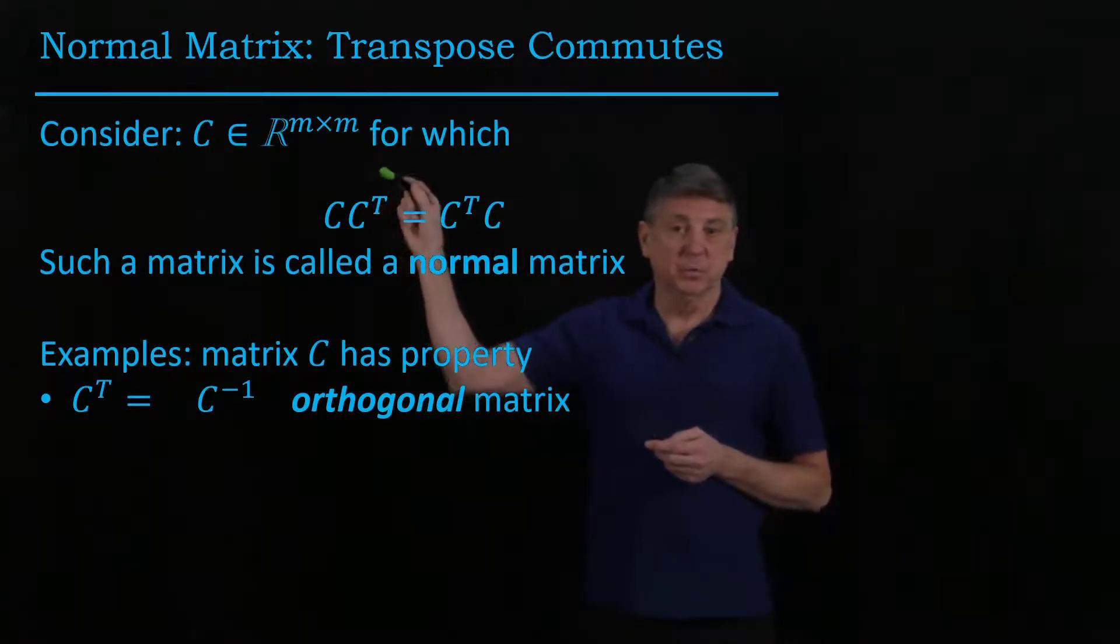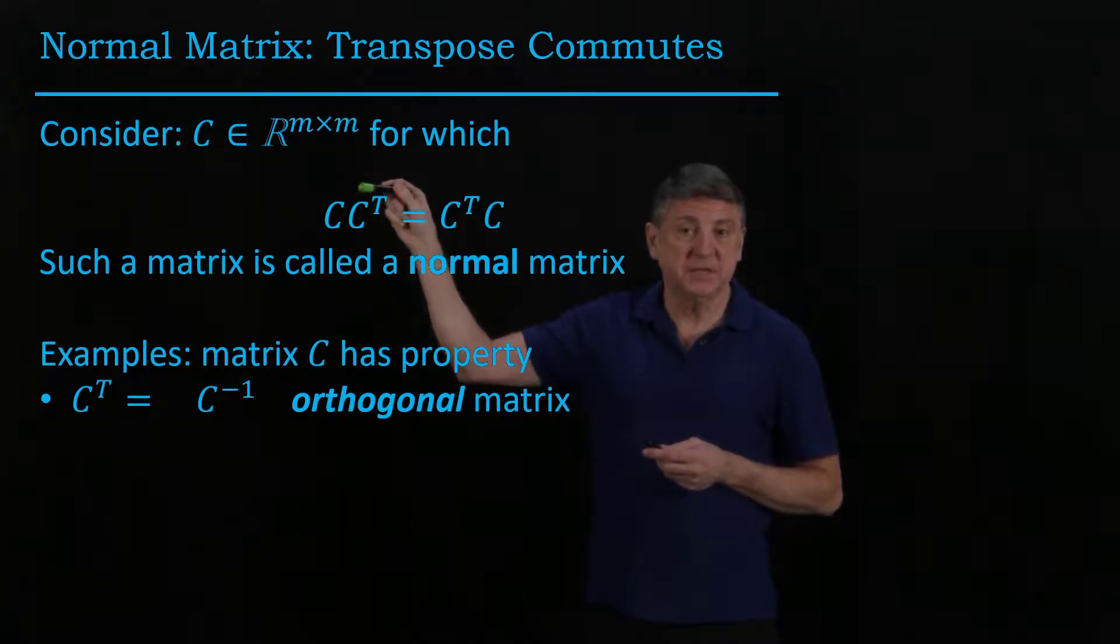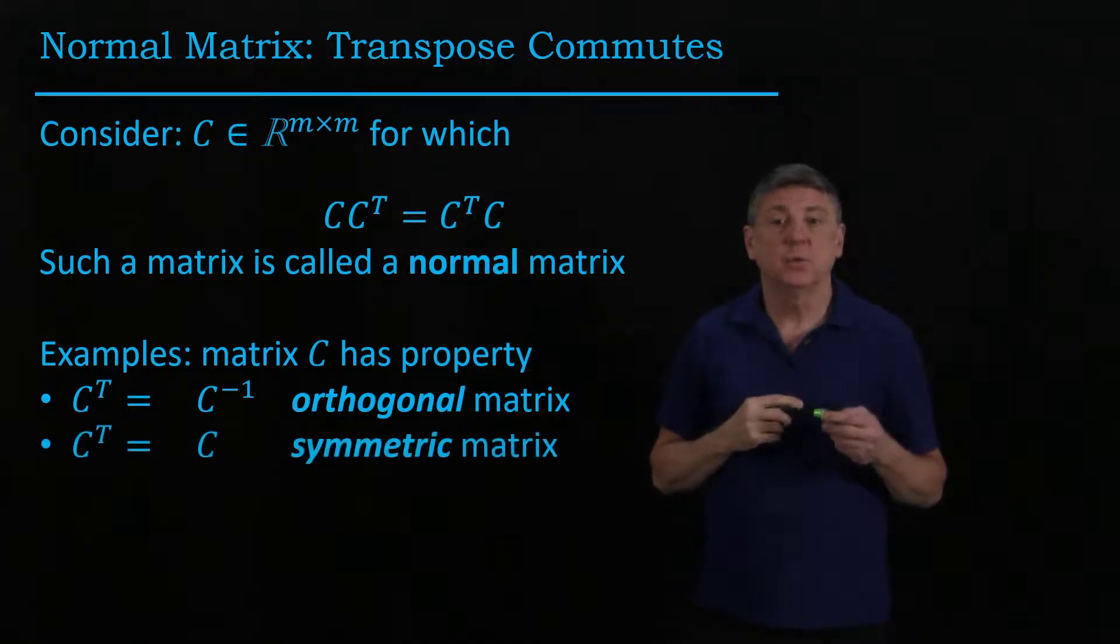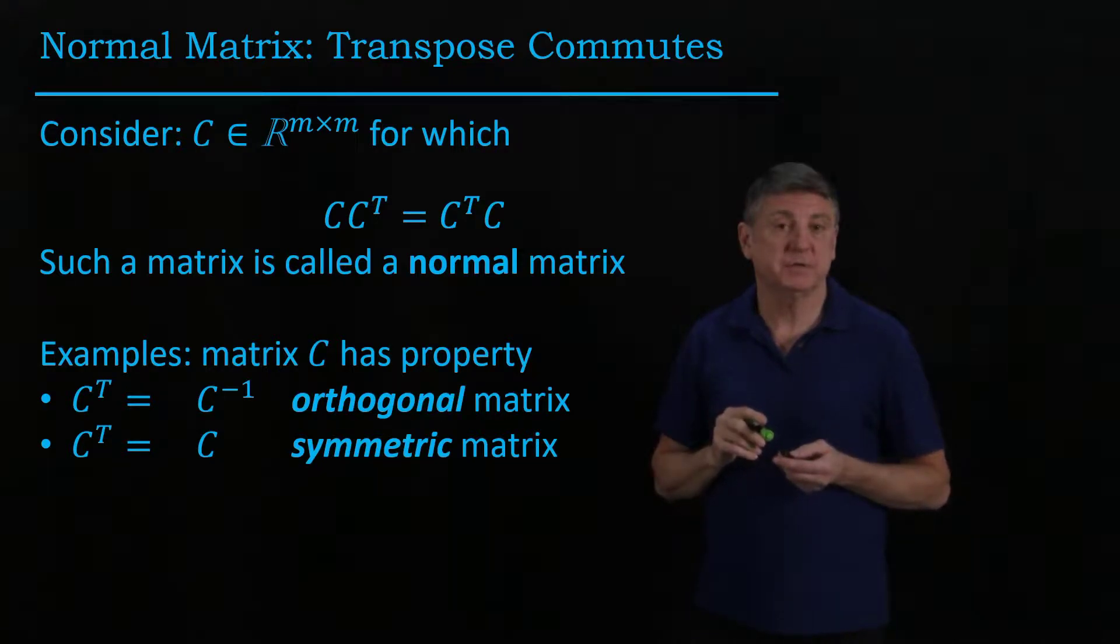Another example would be when C transpose is the same as C, so in this case it would be C times C equals C times C. When a matrix is equal to its transpose, we call that a symmetric matrix.